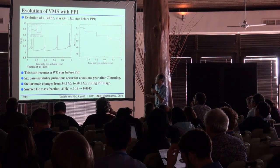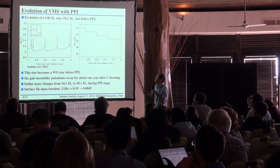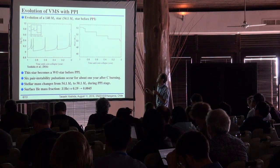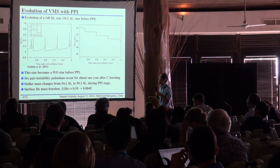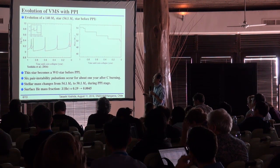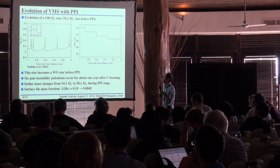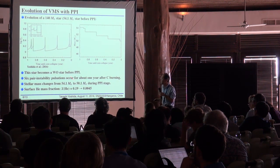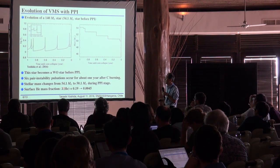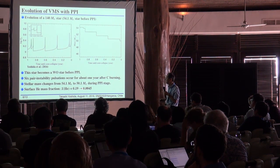This is an example of the result for 140 solar mass. This shows the CO core mass of about 50.4 solar mass. This is the time sequence of central temperature, and we see six pulsations. In each pulsation, we see mass loss like this. During the pulsations, the mass changes from 50.1 to about 50 solar mass, and at the same time the helium layer is lost and the structure also changes from 0.19 to 0.045.